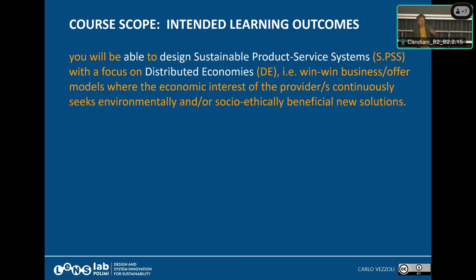When we speak about a sustainable product service system, we include even the economic dimension. We will be working on win-win product service systems — ones that are beneficial in economic terms — and also socio-ethical, so that they are accessible even to low and middle income contexts. This is with a focus on the so-called distributed economy, a production model. As an anticipation: I can produce energy through a big power plant or through a solar panel on the top of my roof — that is a distributed production of energy, instead of centralized.